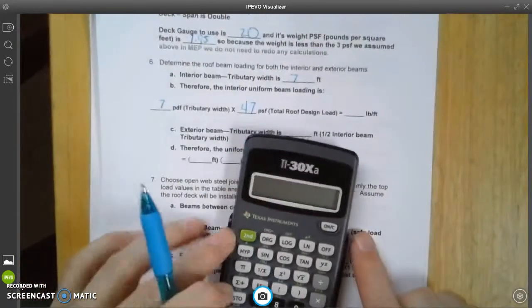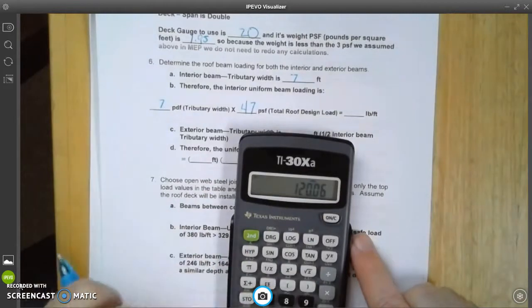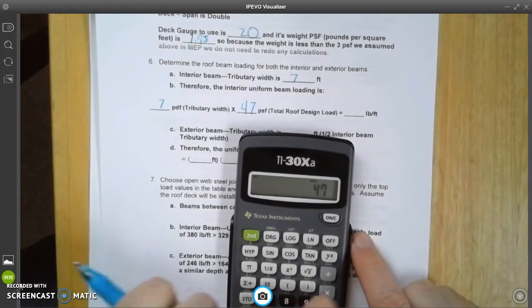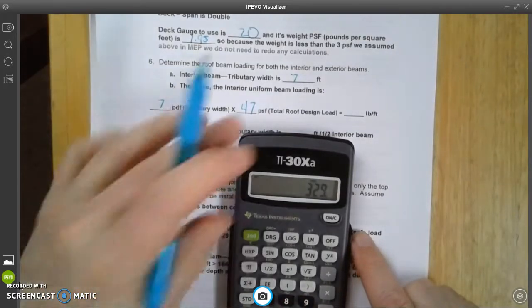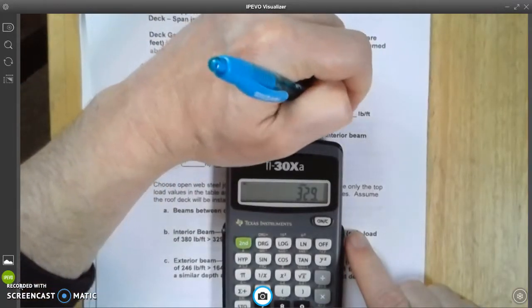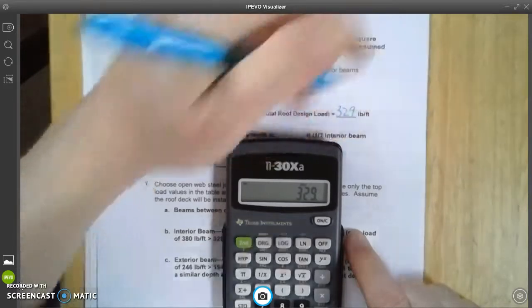So let's get out the calculator. We take 47 times 7, and that is going to give us 329 pounds per foot.